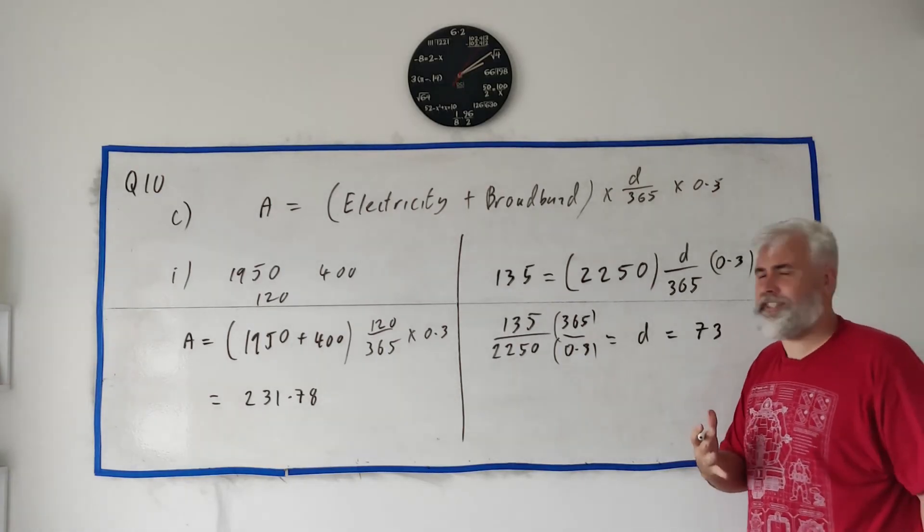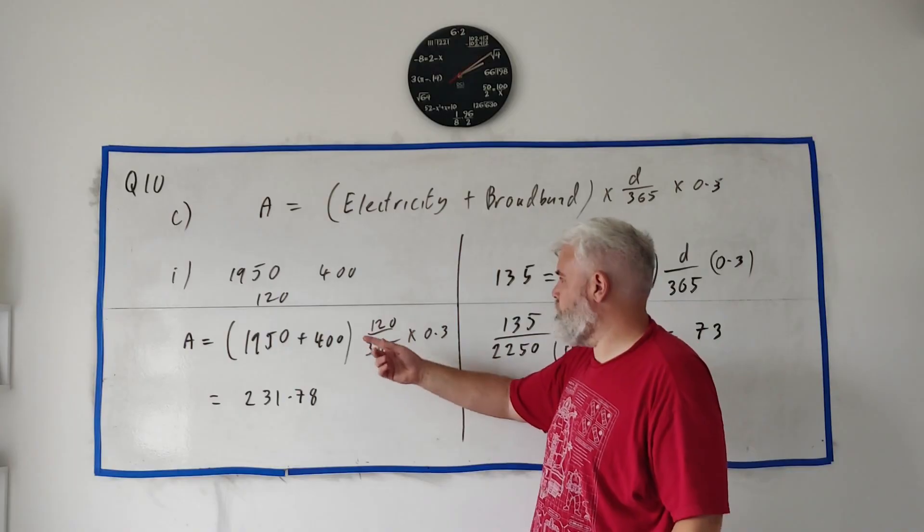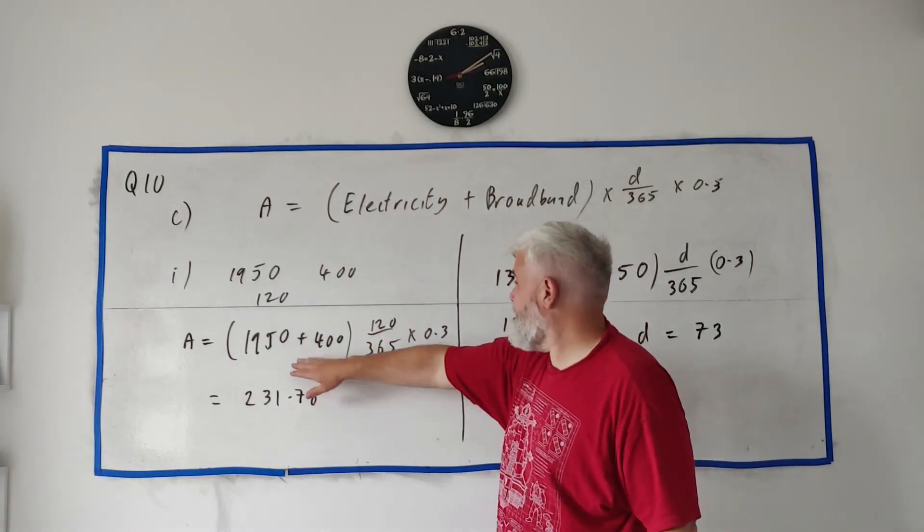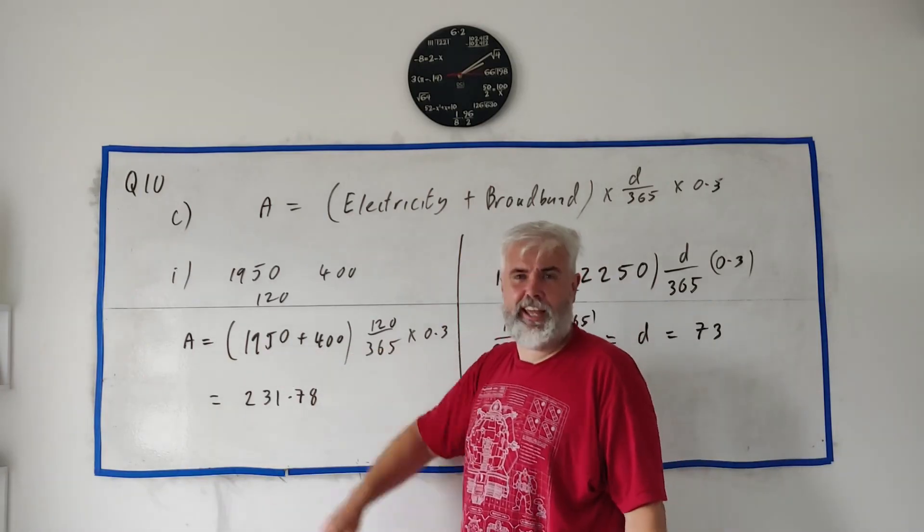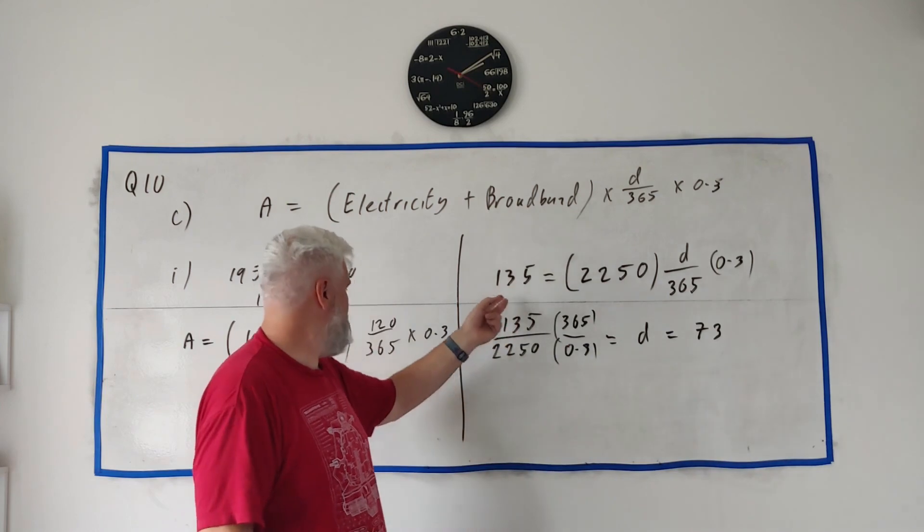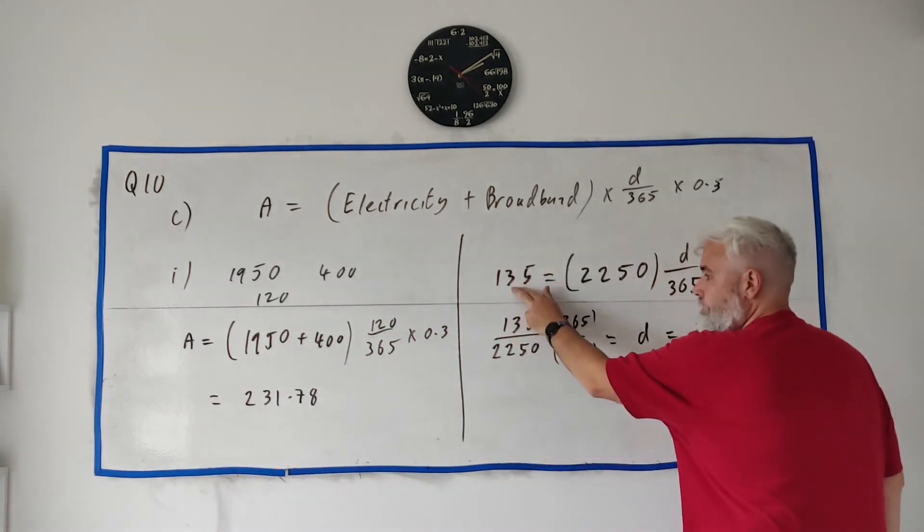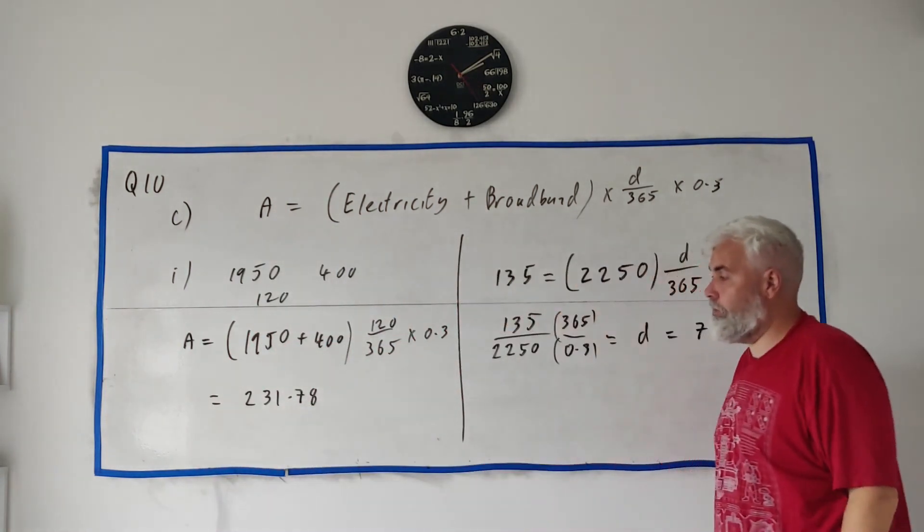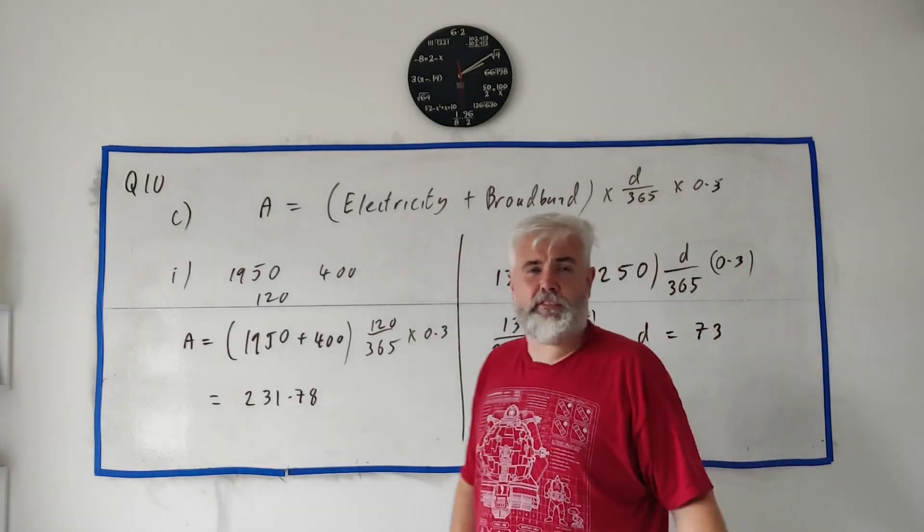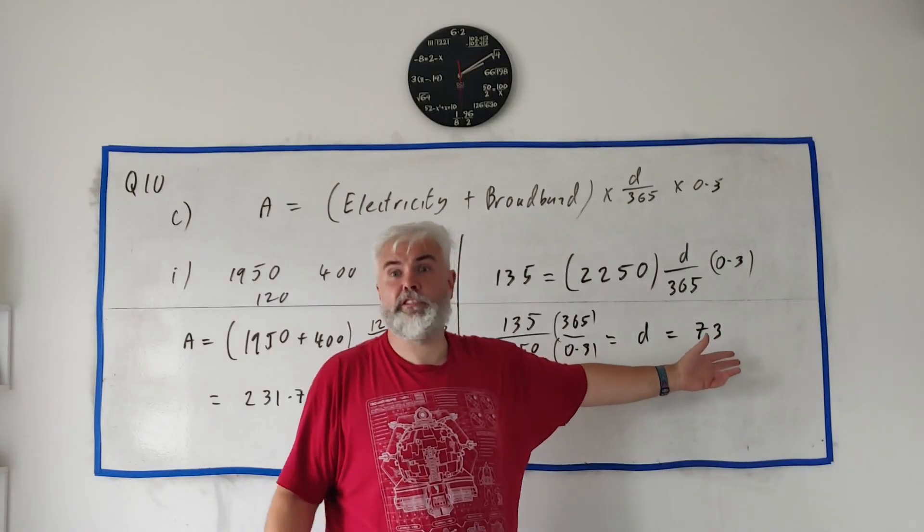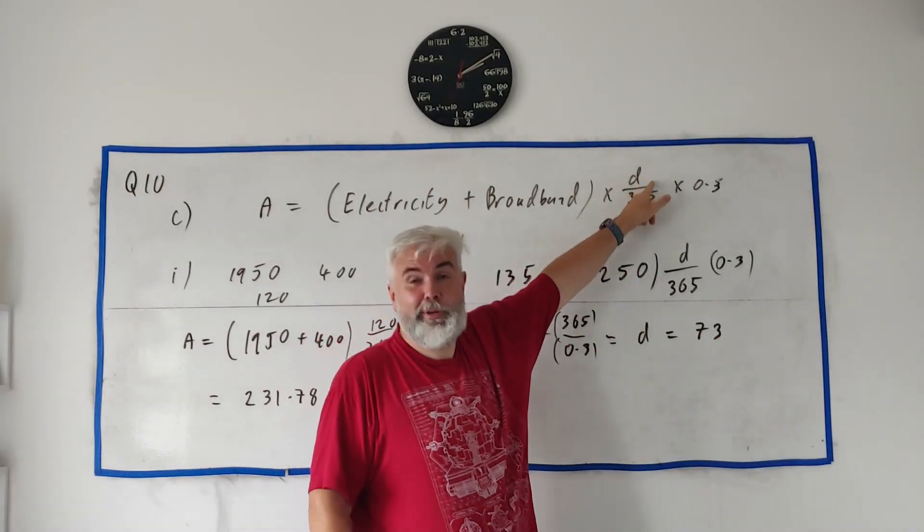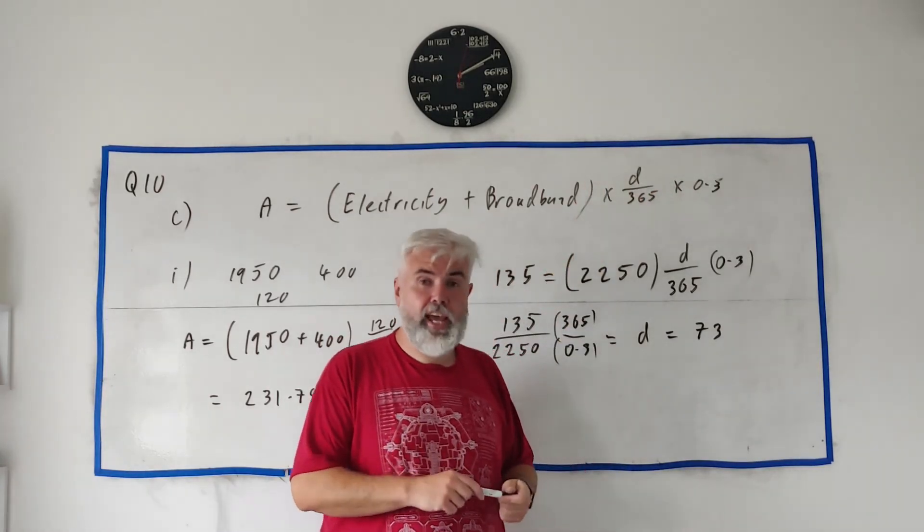Which makes sense. Always make sure your answer makes sense. They worked from home 120 days and got this much relief. This person had only a slightly bigger bill but got much less relief, €135 instead of €230, and that's because she worked from home less. So the answer made sense. If you had gotten an answer of a thousand, you should know something's wrong, because D could never have been bigger than 365.